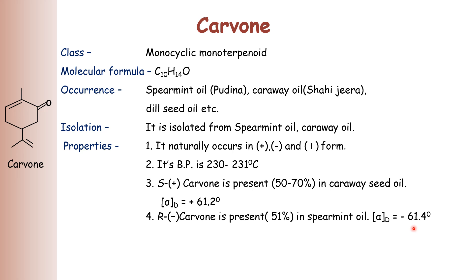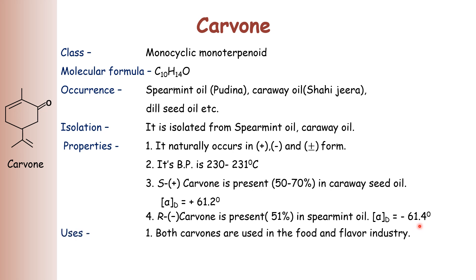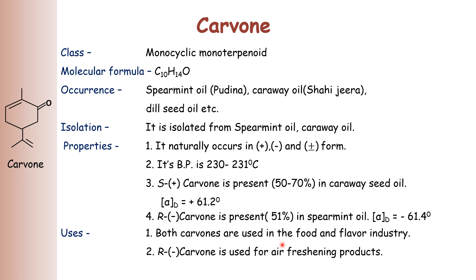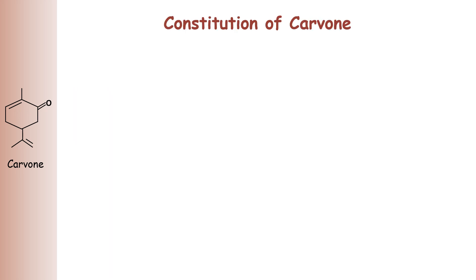S(+)-carvone has an angle of rotation of plus 61.2 degrees and is observed in spearmint oil. R(-)-carvone has an angle of rotation of minus 61.4 degrees, that is levorotatory. Both S as well as R carvone stereoisomers are used in food and flavor industries.